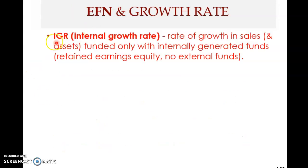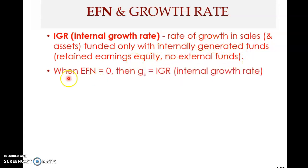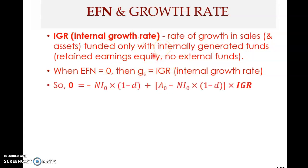We now come to IGR — Internal Growth Rate. IGR is the rate of growth in sales and assets funded only with internally generated funds: retained earnings, equity, and no external funds. When this condition holds, EFN is zero because there are no external funds, and the growth rate g when EFN is zero is called the IGR. So we replace these two conditions — EFN equals zero and g becomes IGR — in the equation.